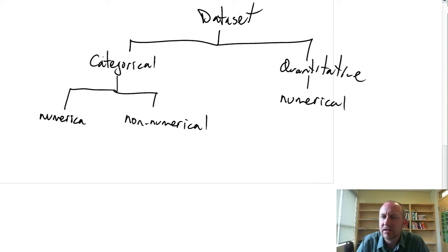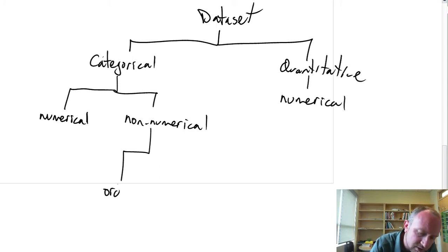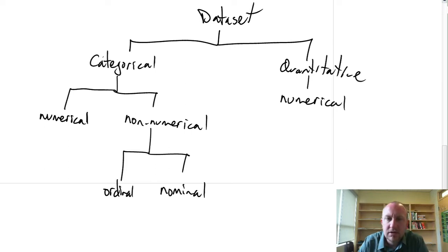Now having just discussed the measurement scales, I know that the only variables that can be non-numerical are either ordinal variables or nominal variables. So an ordinal variable or a nominal variable, these can be non-numeric and they are all categorical.